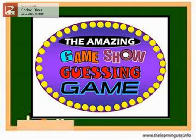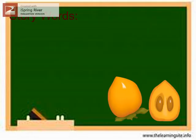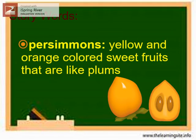Let us play a game. Let's call this a guessing game. All you have to do is to guess what is in the picture. It's persimmons! These are yellow and orange colored sweet fruits that are like plums. Persimmons.